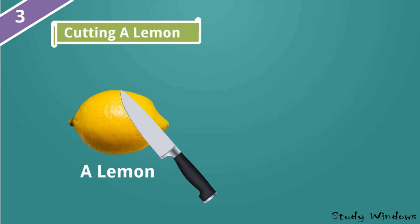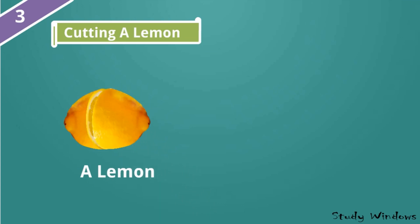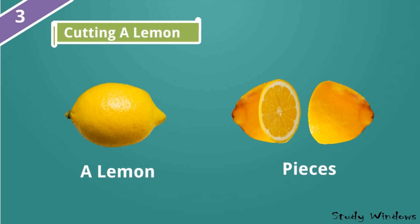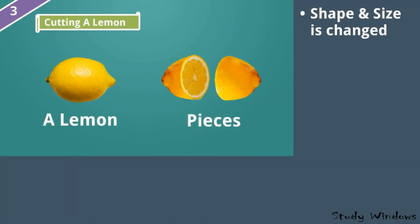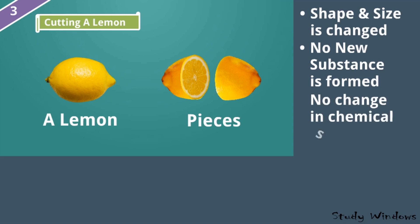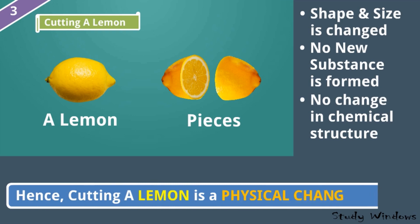Cutting a lemon: Look at this example. We take a whole lemon, use a knife, and cut it into two pieces. The size and shape are different when you compare the whole lemon with one piece. However, both things are lemon, so no new substance is formed. There is no change in chemical structure because both are lemon. Hence, cutting a lemon is a physical change.